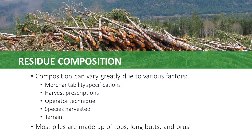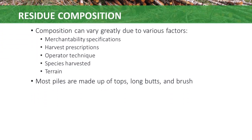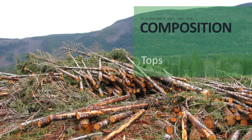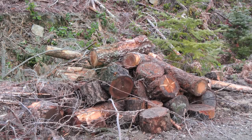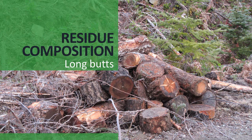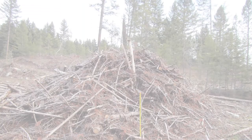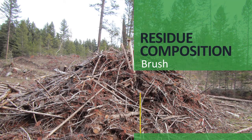However, most piles are made up of a mix of tops, long butts, and brush. A top is the uppermost piece of a tree left over after the saw logs and/or pulp logs have been removed. Logs below minimum grade are also included in this designation. A long butt is the lowermost piece of a tree that is often cut off and disposed of due to quality problems such as rot or excessive sweep. Long butts are shorter than the minimum grade length, which is usually 3 meters. Brush refers to the branches, needles, and loose bark removed from the tree stem during the processing phase of logging.